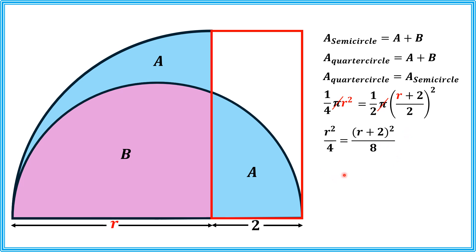Multiplying both sides by 8 and expanding the binomial on right-hand side, we will get 2R squared equals R squared plus 4R plus 4. And after simplification, we will get a quadratic equation R squared minus 4R minus 4 equals 0.